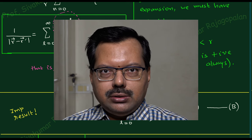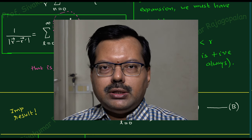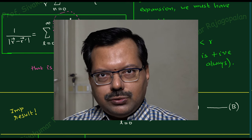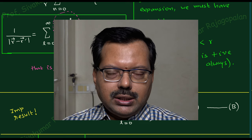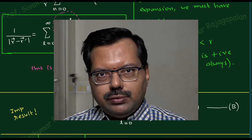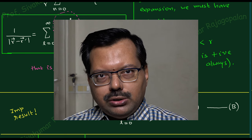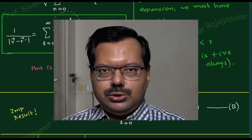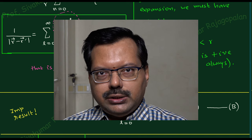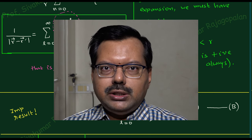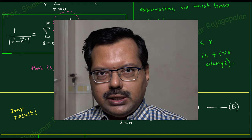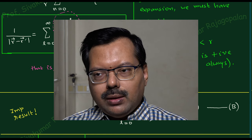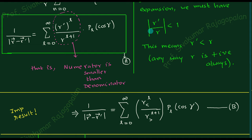We expanded it in a binomial expansion, and remember that the binomial expansion is valid only if the quantity under expansion has absolute value less than 1. That is the condition for convergence. Otherwise the series diverges, and then the electric potential would diverge and not represent a physical situation. Therefore, the very important condition for the binomial expansion is that whatever you are expanding as a power series must be less than 1.